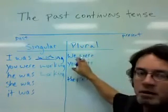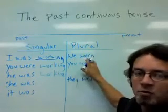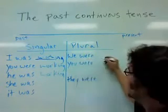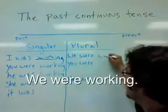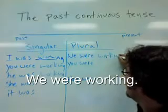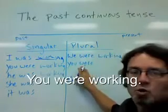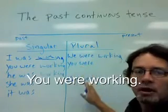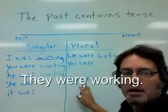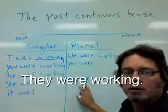On the plural side, you use were. We were working. You were working. And they were working.